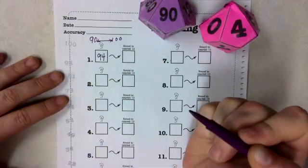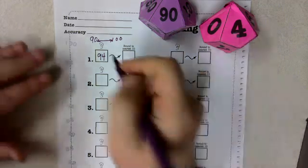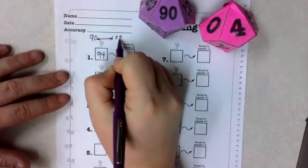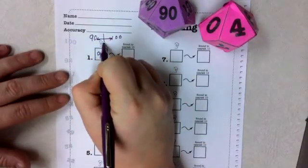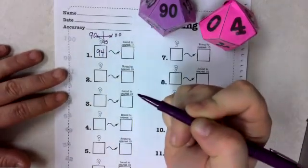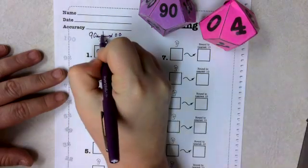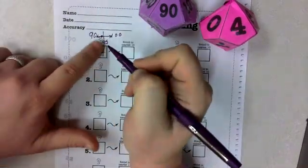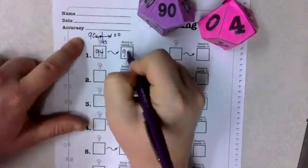And if they're still struggling, making it visual is powerful. So if this is 90 and this is 100, 95 is right in the middle. Where is 94 going to fall? Well, it falls before 95. So what is it closer to? It's closer to 90.